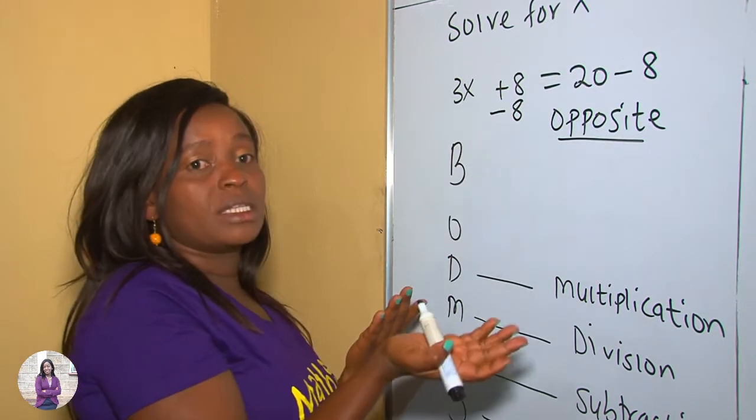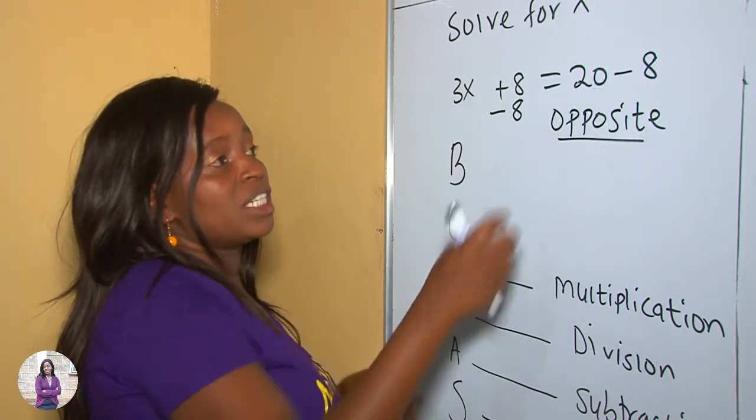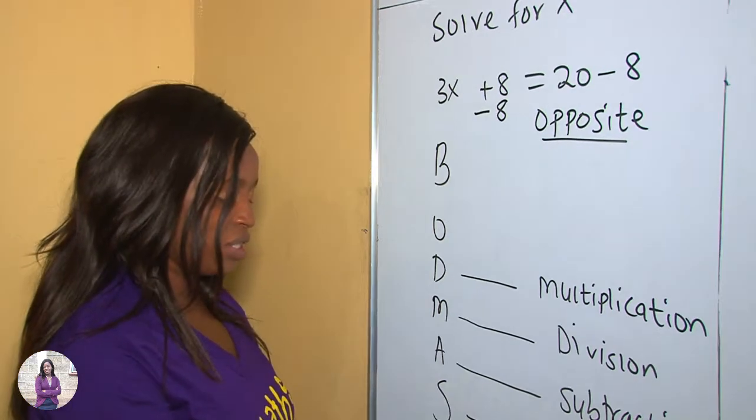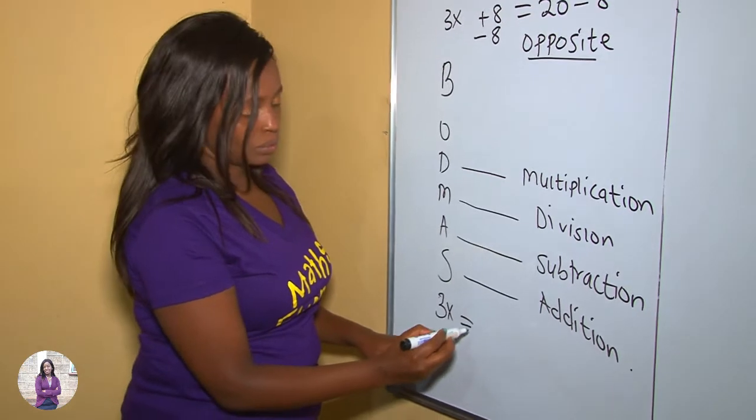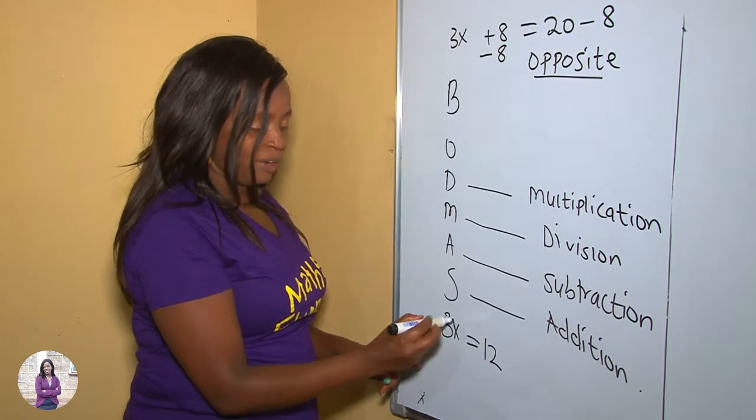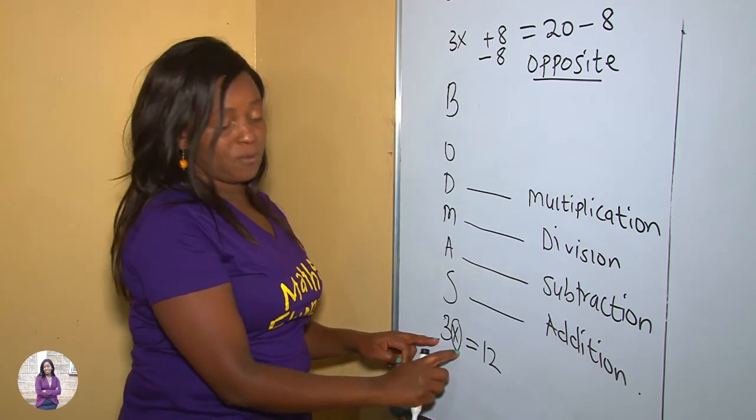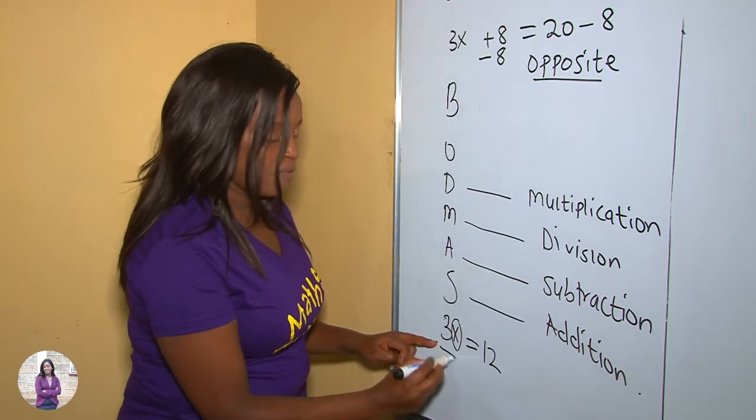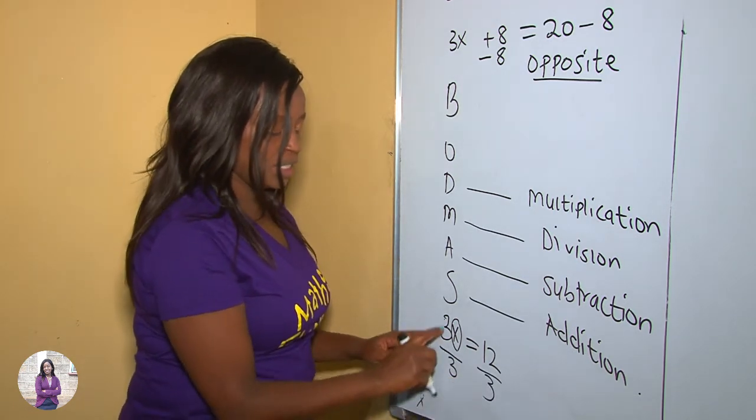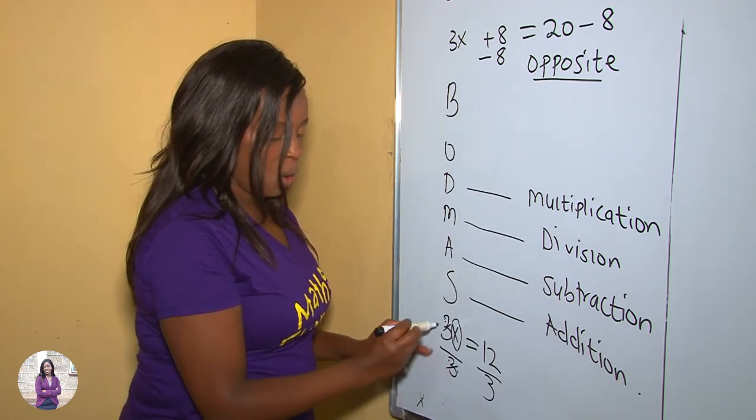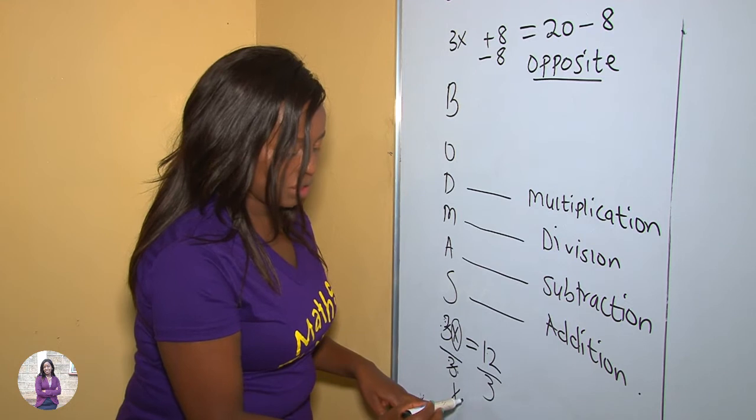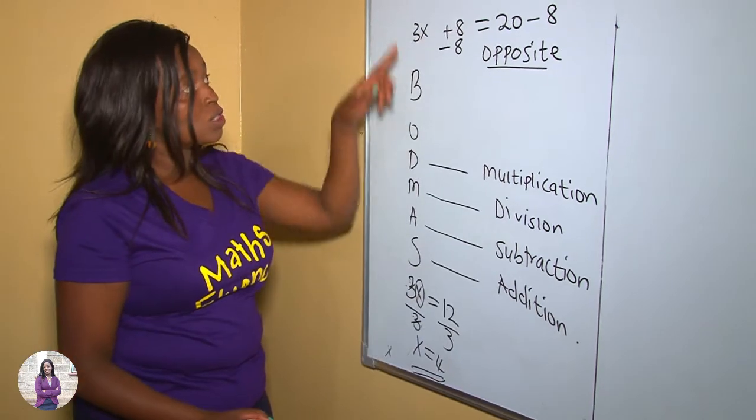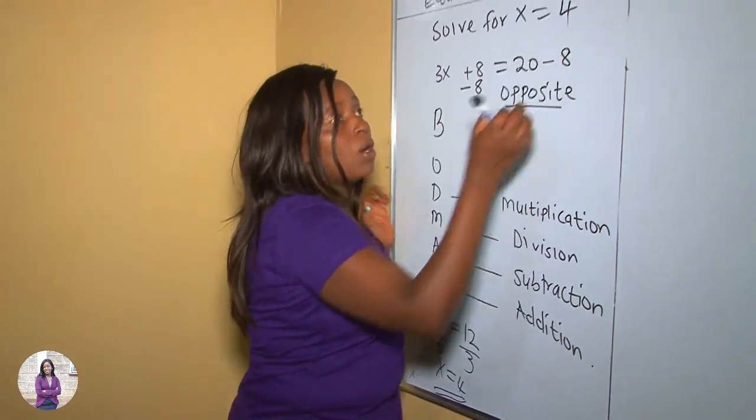8 take away 8 is 0, and 20 take away 8 is 12. Therefore we are going to have on the left we are left with 3x is equals to 12. We want to be left with x here, and this x has a coefficient, that 3x. To do away with this number here, which is digit 3, we divide on both sides by this digit 3. So 3 divided by 3 is 1, 1 times x is x, 12 divided by 3 is 4. And by this we have worked out the value of x, which is 4. So we have solved for x which is equals to 4.